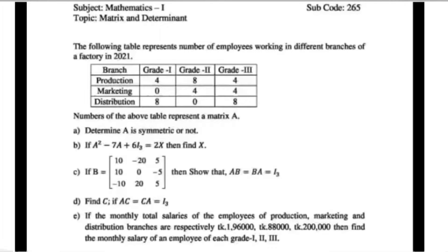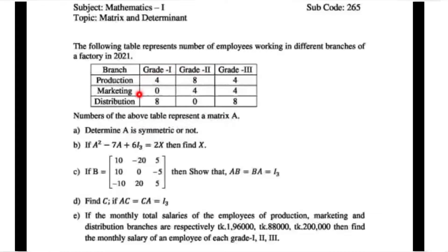We are here solving the questions. Looking at the stem carefully, it has been given Grade 1, Grade 2, and Grade 3. In this branch there is production, marketing, and distribution. The numbers in the above table represent matrix A — these numbers are the rows and columns of matrix A.